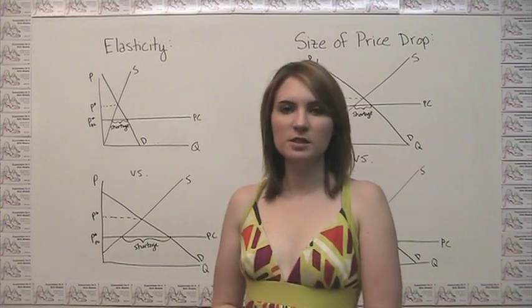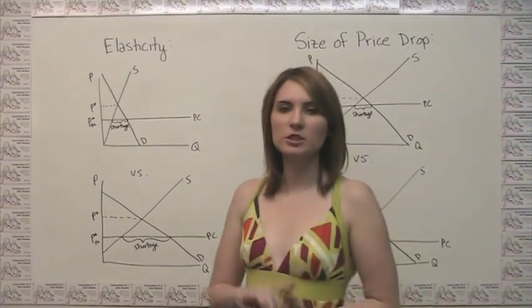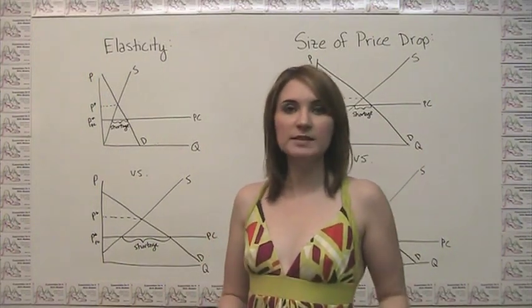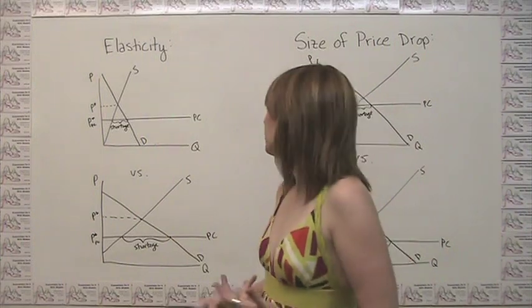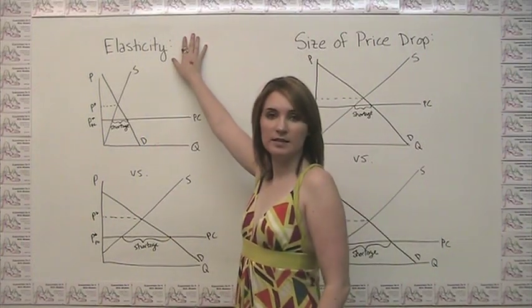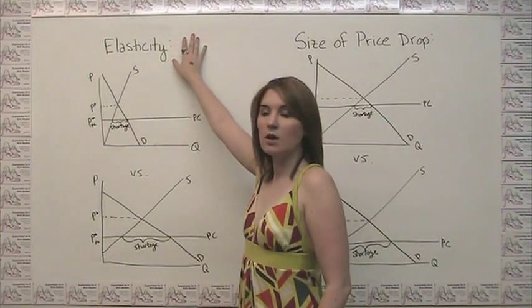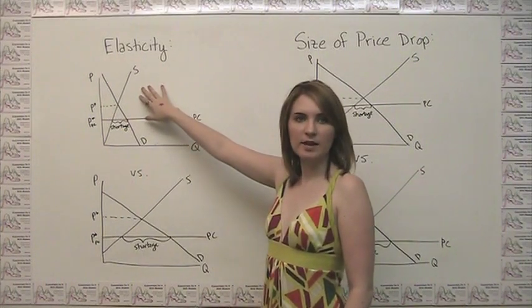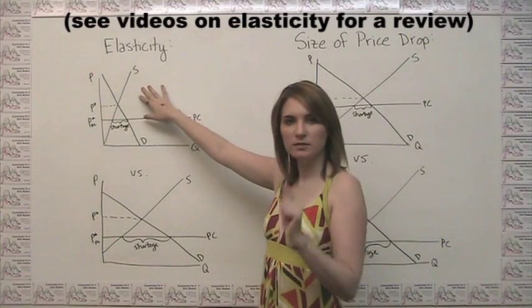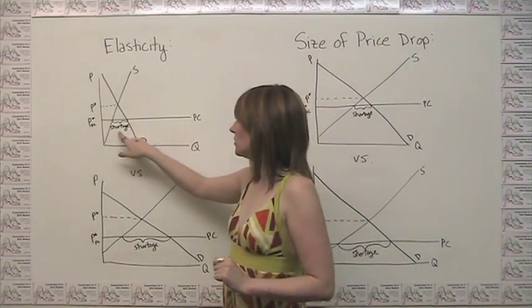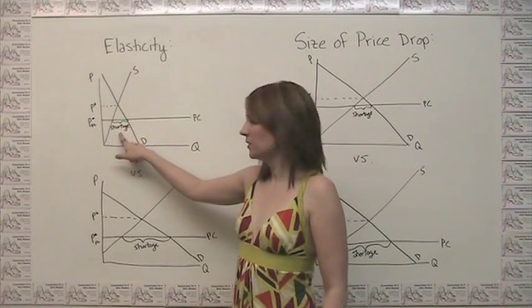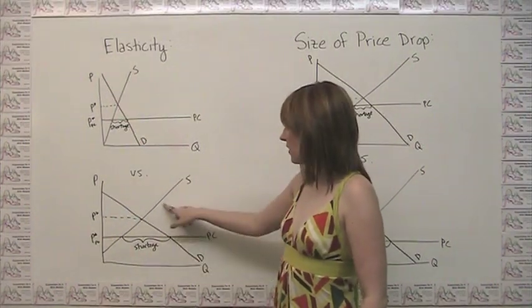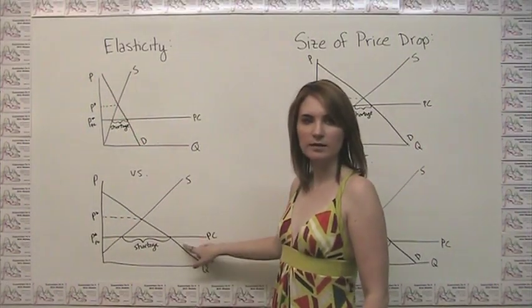There are two basic features that affect how large the shortage is that results from a particular price ceiling. One of those things is the elasticity of supply and demand. All else being equal, when you have more inelastic supply and demand, meaning steeper supply and demand, you're going to get a smaller shortage than if you have more elastic supply and demand.